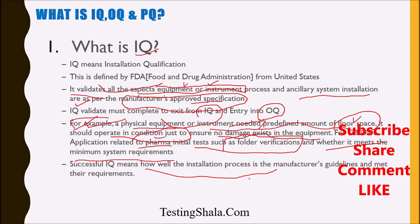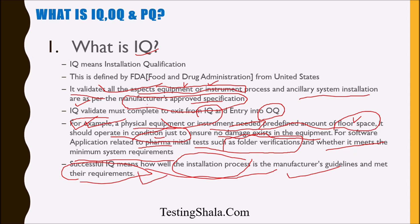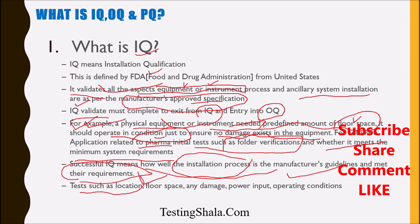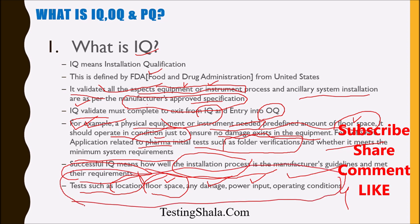When Installation Qualification is successful, it means we are able to follow the installation process as per the manufacturer's guidelines and it is meeting the requirements or specifications approved by the FDA. In Installation Qualification, tests include checking the location where we are going to install the product, whether there is enough floor space for physical equipment, or validating file specifications and disk space for software. For equipment, we also validate power intake thresholds and different operating conditions.